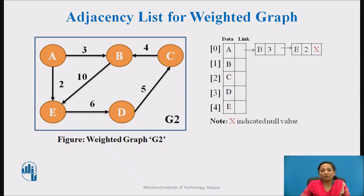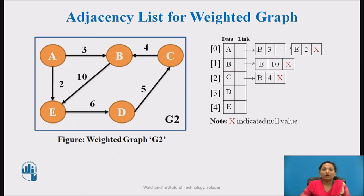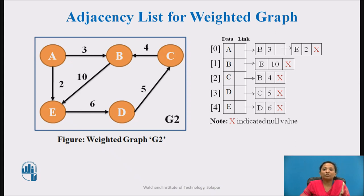An outgoing edge is present from node b to node e with weight 10, therefore node b is linked to node e where node e holds edge weight value 10. An outgoing edge is present from node c to node b with weight value 4, therefore node c is linked to node b where node b holds edge weight value 4. An outgoing edge is present from node d to node c with weight value 5, therefore node d is linked to node c where node c holds edge weight value 5. An outgoing edge is present from node e to node d with weight value 6, therefore node e is linked to node d where node d holds edge weight value 6.